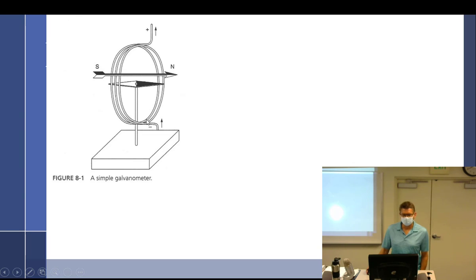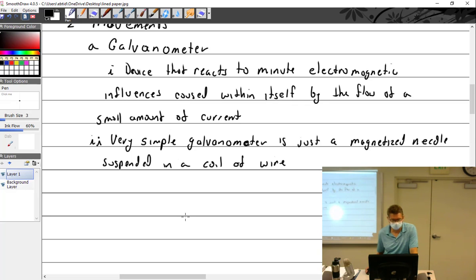And you have a coil of wire. When you pass current through this wire, it is going to create a magnetic field which will then influence the needle. So it's kind of like a compass with a coil of wire that goes around it, that influences it.